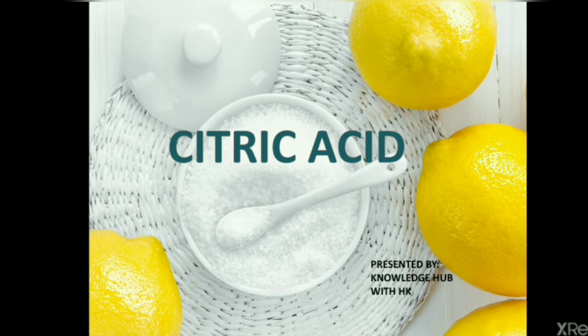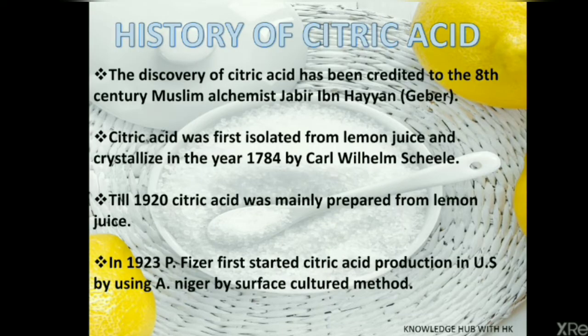First, we'll get to know the history. The citric acid discovery has been credited to Muslim chemist Jabir ibn Hayyan of the 8th century. Citric acid was first isolated from lemon juice and crystallized in the year 1784 by Carl Wilhelm Scheele. Till 1920, citric acid was mainly prepared from lemon juice. It has been known as a natural plant substance since the end of the 19th century.